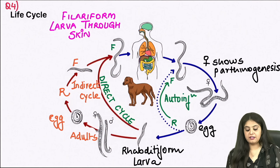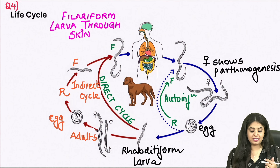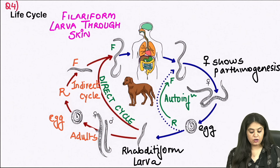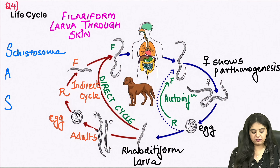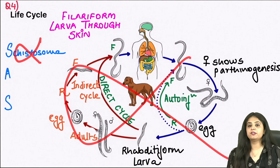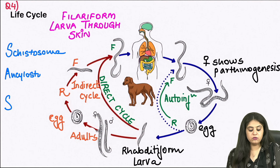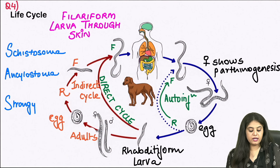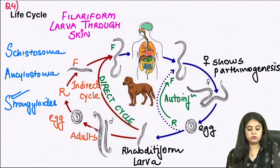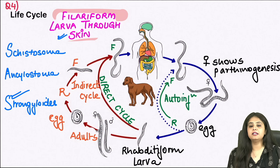Moving on to question 4: a life cycle asked in both FMG and NEET exams. The infection is characteristically occurring via the skin. Whenever skin penetration is asked, think of 3 organisms: Schistosoma (a trematode with a snail in its life cycle — ruled out as no snail is visible), Ankylostoma or hookworm (shows segmented eggs — also ruled out), and the third is Strongyloides. This is the life cycle of Strongyloides stercoralis entering through the skin, with the infective filariform larvae penetrating.